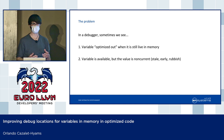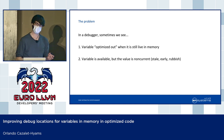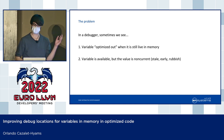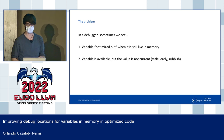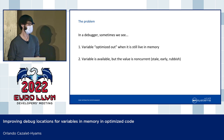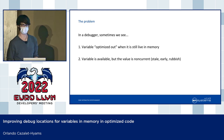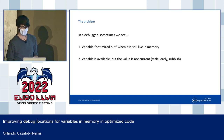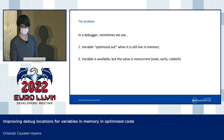The first problem is that the variable is reported as optimized out even though it's still live in memory, and sometimes you can work that out just by looking at the disassembly. The second problem is that sometimes you ask the debugger for the value of a variable and it's incorrect, and usually you don't know that at the time.